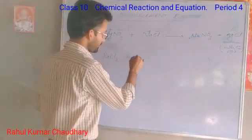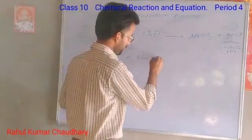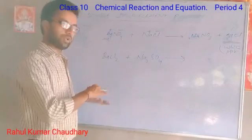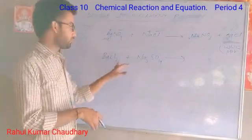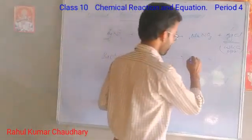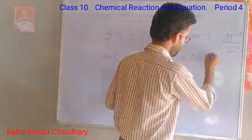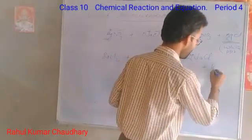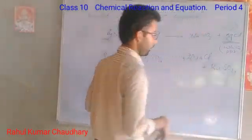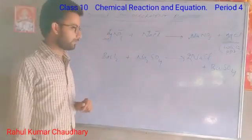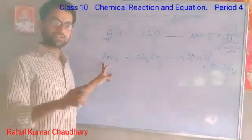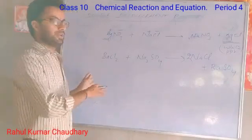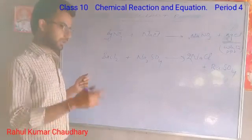Let's consider another example: BaCl2 plus Na2SO4. Both elements are displaced from each other — sodium is displaced to the other side. BaCl2 also produces a white precipitate. That type of reaction in which exchange of ions occurs and both elements present displace each other is called a double displacement reaction.